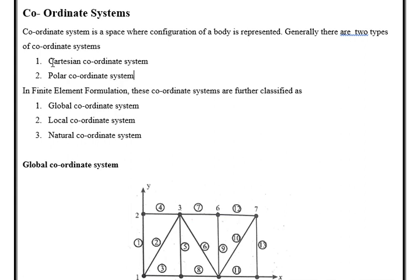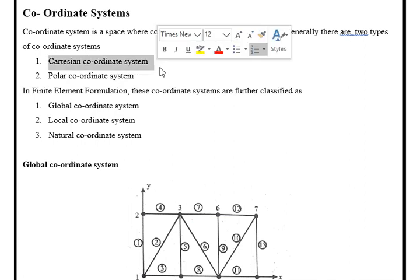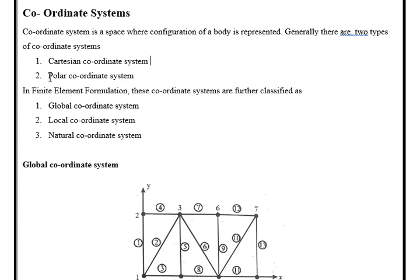In the Cartesian coordinate system, we use x, y, z coordinates. In the polar coordinate system, we use r, theta, etc. as coordinates. But in finite element formulation, there are three types of coordinate system that we use.